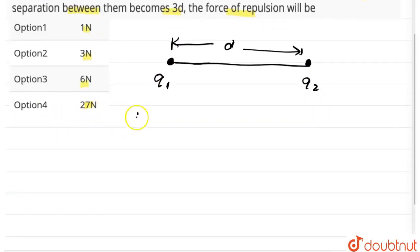So according to Coulomb's law, the force between them would be f is equal to 1 upon 4 pi epsilon 0 q1 q2 upon d square. Let us say this is our equation number 1.